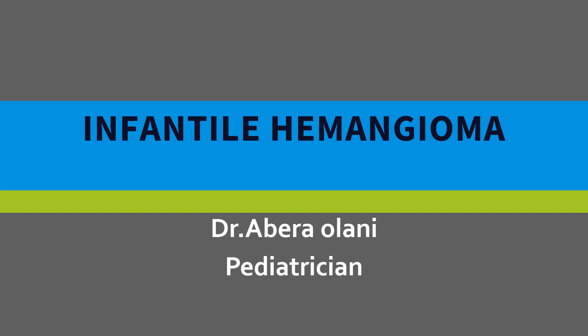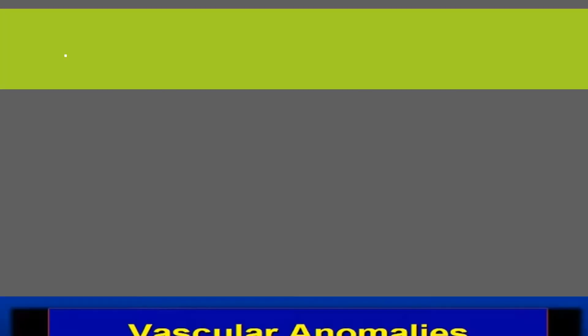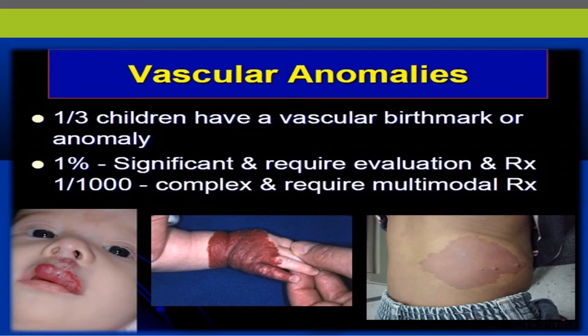Today I'm going to talk about hemangioma. When we see vascular anomalies, one third of children have a vascular birthmark or anomaly at birth, and from this, some have significant findings that require evaluation and also might require complex treatment modalities.